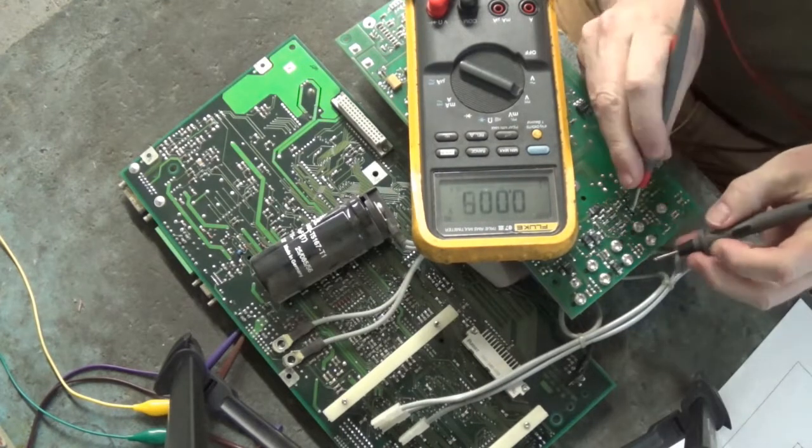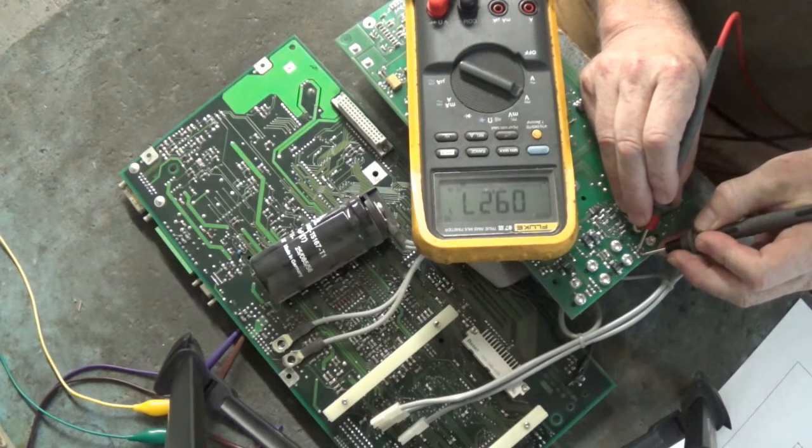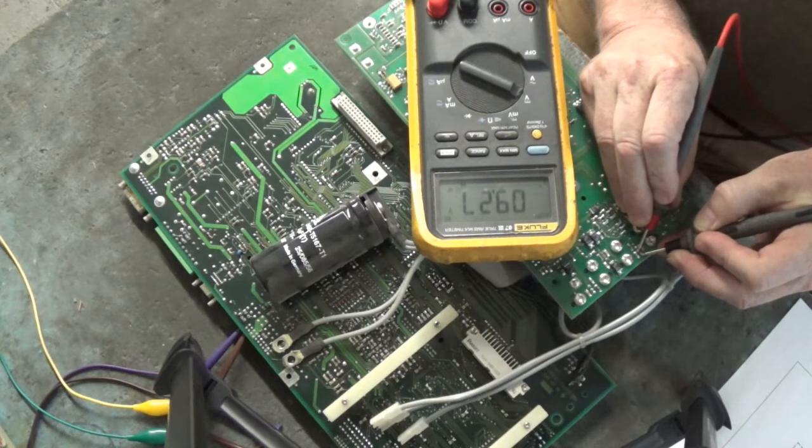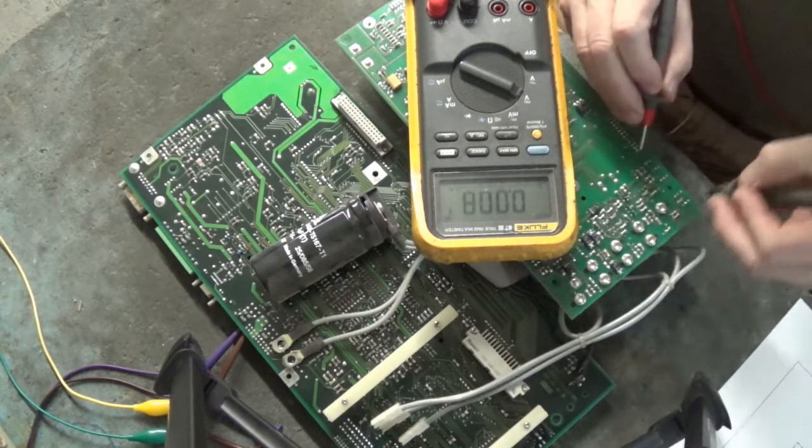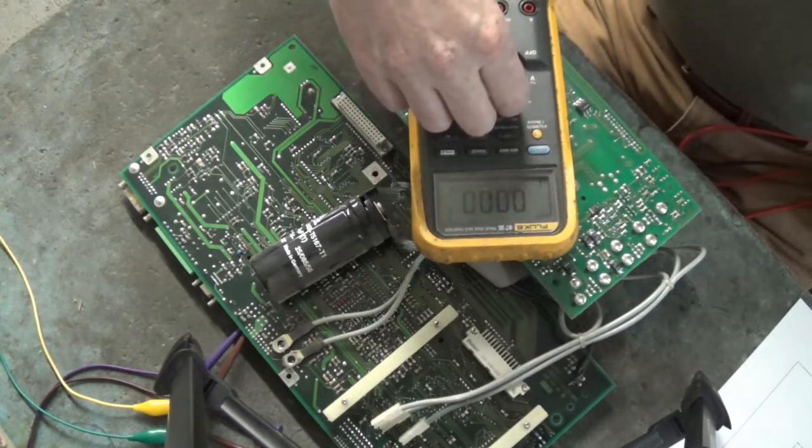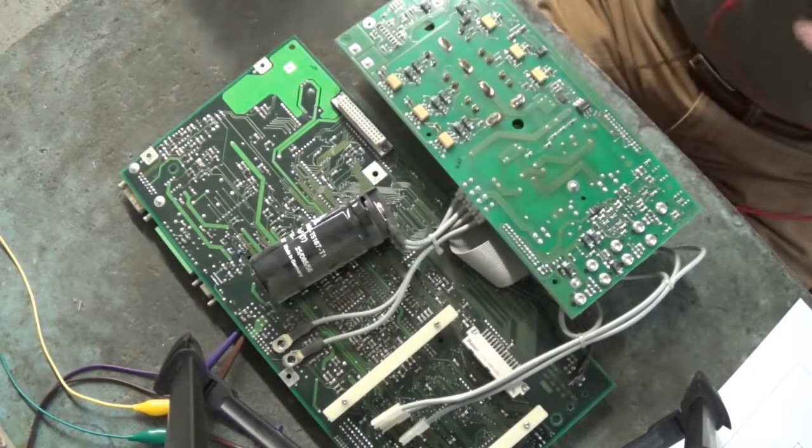This one here, something's going on with this one here. Its output is higher than the others at 9.27 volts DC. We'll pull these current senses and put some new ones in there.